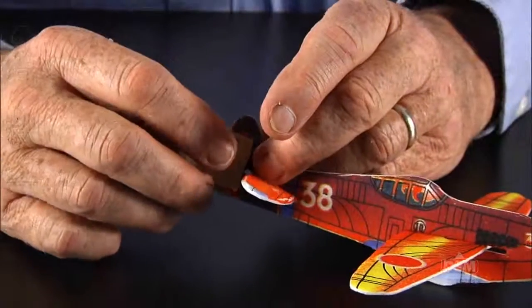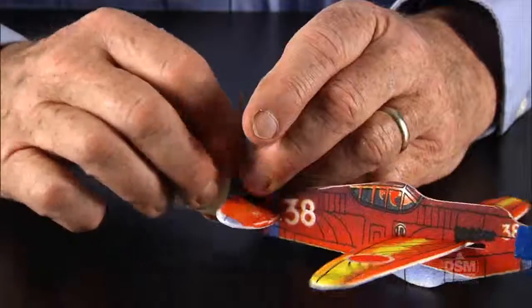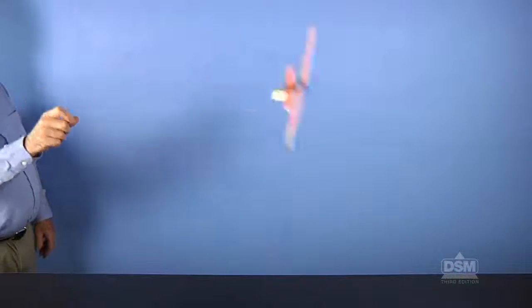Give students a minute to think about how the air would flow past the plane with the rudder turned in different positions. Then, instruct the students to bend the rudder to the right and launch the glider. For this trial, the nose of the glider should turn to the right.